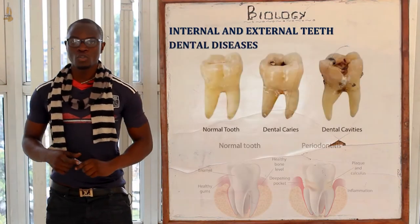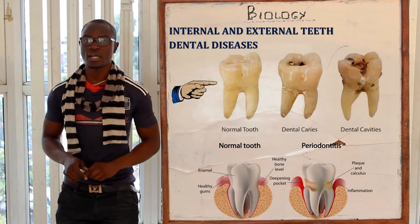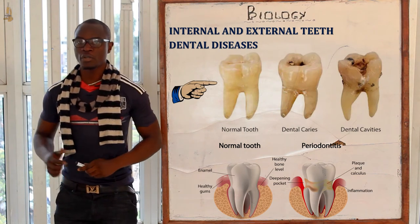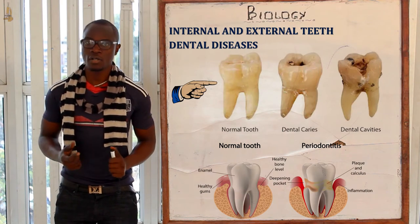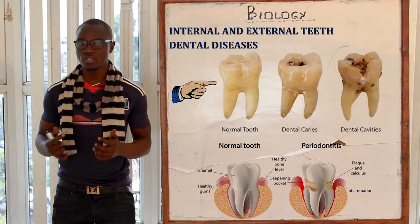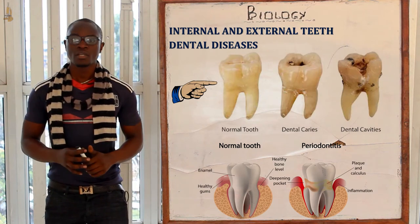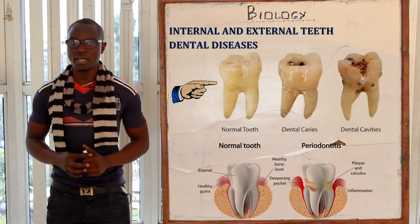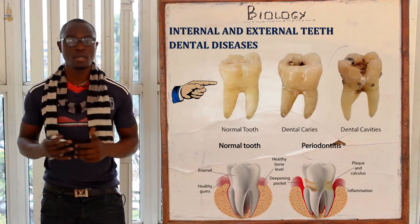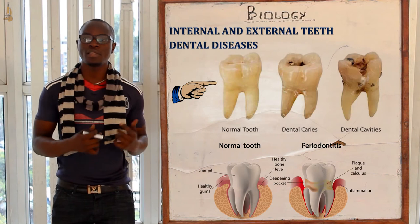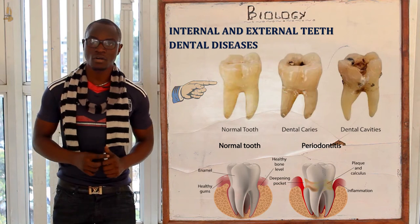Now let's look at the dental diseases. First we have dental caries and the other disease is periodontal disease. Dental caries is mainly brought about when bacteria on top of the teeth or food substances left on the teeth tend to corrode the crown or enamel. The bacteria feed on food on the teeth, multiply, and release acidic compounds which are responsible for corroding the enamel, leading to dental caries or tooth decay.